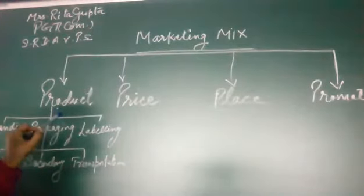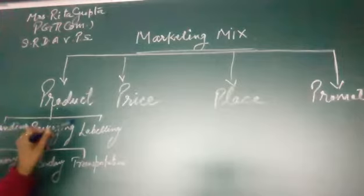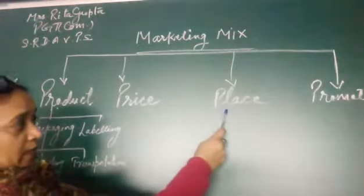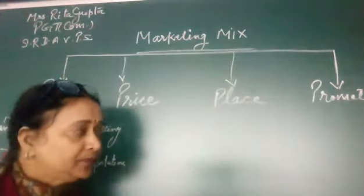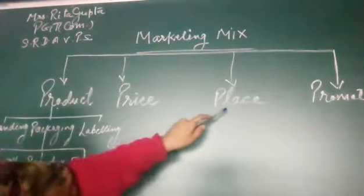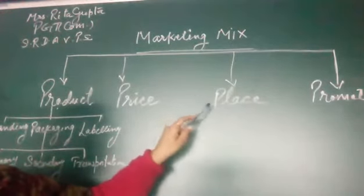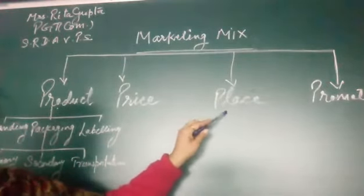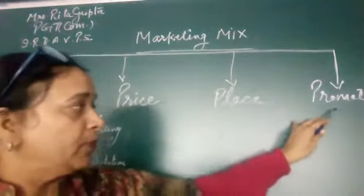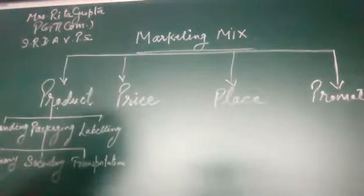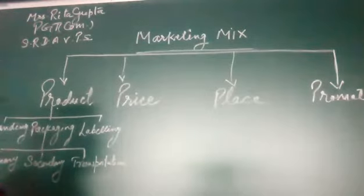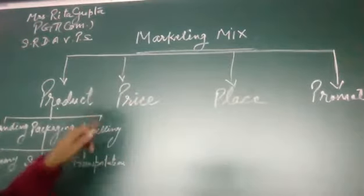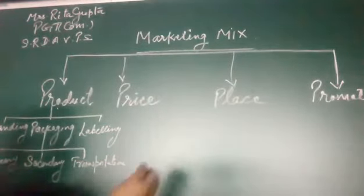First of all you must have a product. Then you decide the price of that product. Then you increase its utility and make it available in different parts of the country — that is place utility. And promotion means the efforts done to increase sales or to inform customers about the product. The combination of these is known as the four P's.